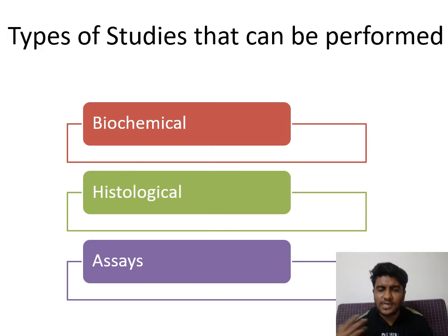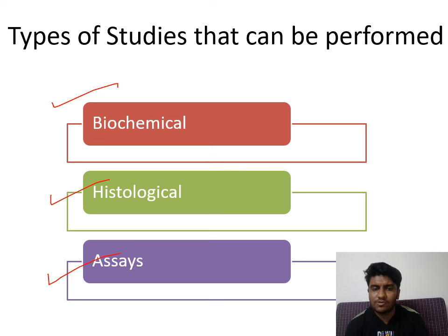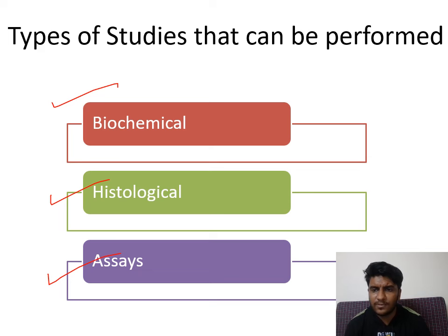Types of studies include biochemical and histological assays. Bioassays and histological studies can be performed on animal tissues. Biochemical assays include various estimations — protein using Bradford's, ninhydrin, biuret, Folin-Ciocalteu, or Lowry methods — and glucose estimation using the GOD-POD method. There are many different biochemical estimations you can do using animals.